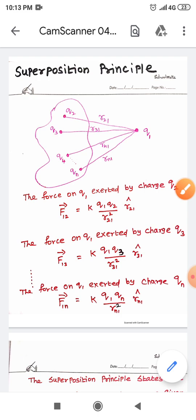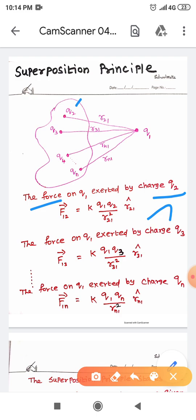First, let us try to find the force on Q1 exerted by the charge Q2. For that simply you can use the Coulomb's law. Q2 is here and it is the line of joining. That's why F12 vector will be acting in this direction. And its magnitude will be equal to K into Q1 Q2 divided by R21 square, and the direction is R21 cap.